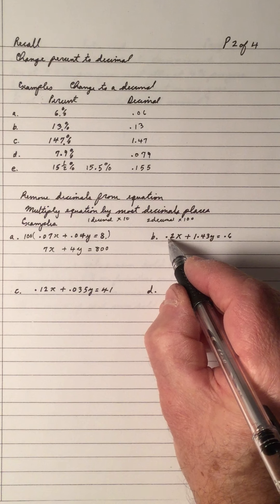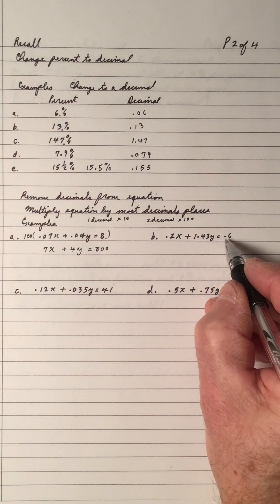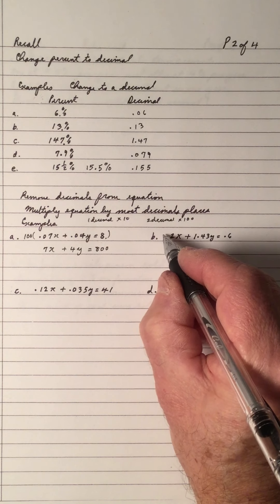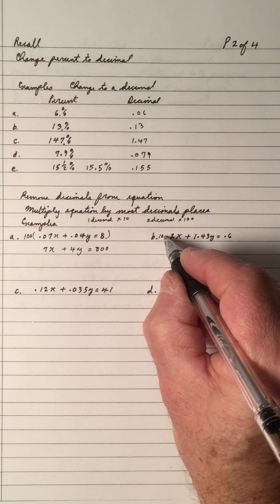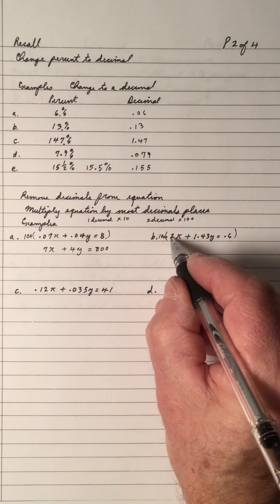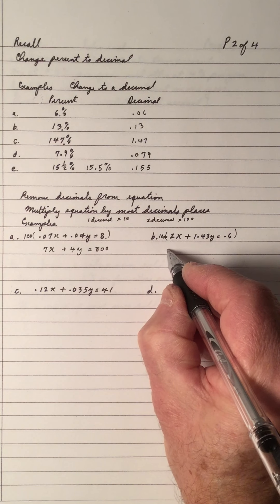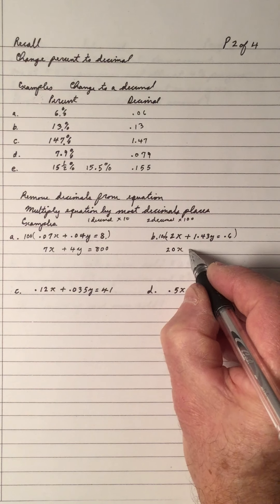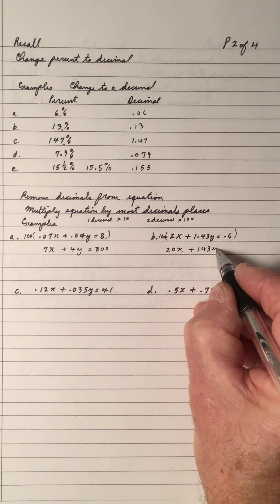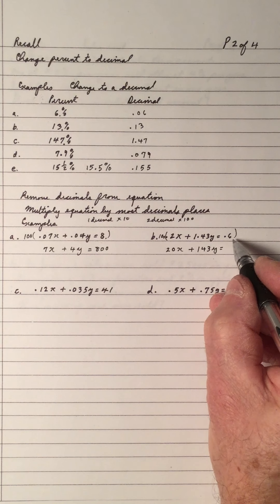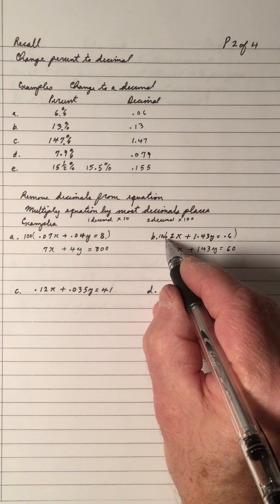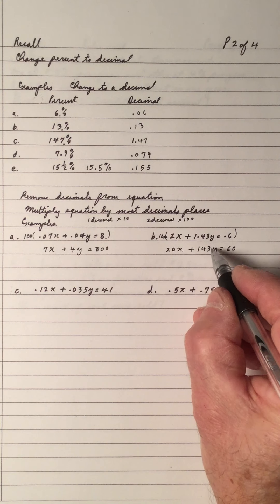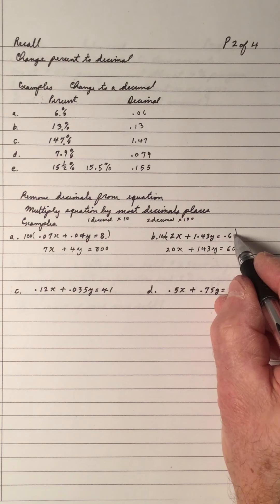Example B: one decimal place, two decimal places, one decimal place — so the maximum is two decimal places. Multiply by 100. 100 × 0.2 = 20, the next term gives 143, and the last gives 60. When moving two places, add zeros as needed.